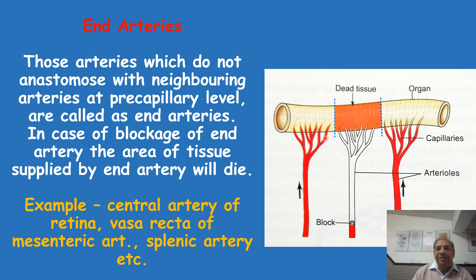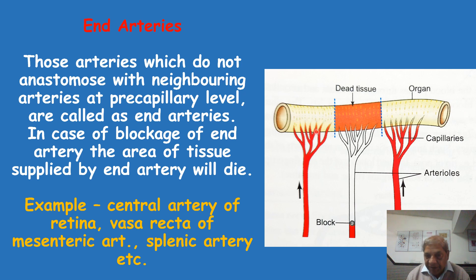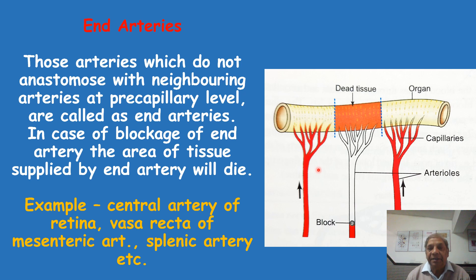End arteries are those arteries which do not anastomose with the neighboring arteries at the pre-capillary level. For example, this is an organ — say, for example, it is the small intestine — and here we have shown that there are three capillary plexuses present which are in continuation with the arterioles. Three neighboring arterioles are breaking into the capillary plexuses for this organ, and here there is no anastomosis.